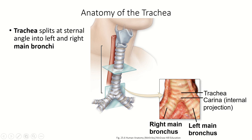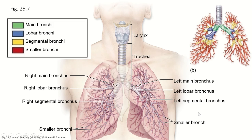The trachea splits at the bottom to form the main bronchi — the right one on the right, the left one on the left. Where the trachea splits, there's a special piece of cartilage called the carina, which looks kind of like a bikini bottom or sometimes just a little triangle. It creates the division between the right and left main bronchus. Each of these main bronchi — bronchi being the plural of bronchus — supplies air to one of the lungs. In the next segment, we'll talk about how the main bronchi branch.